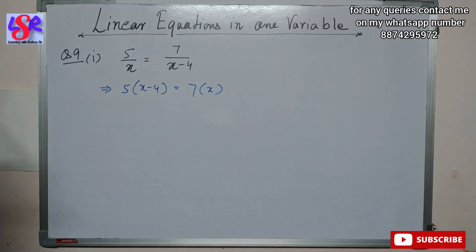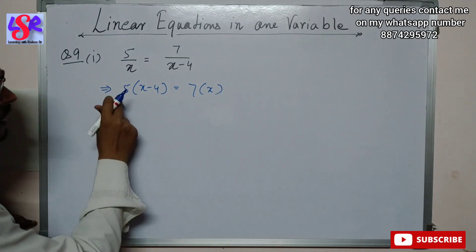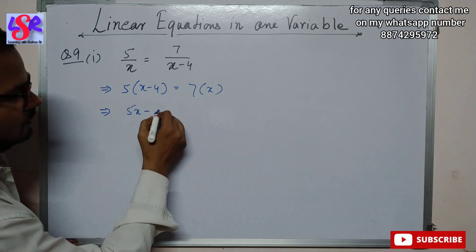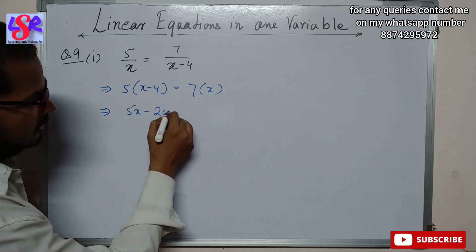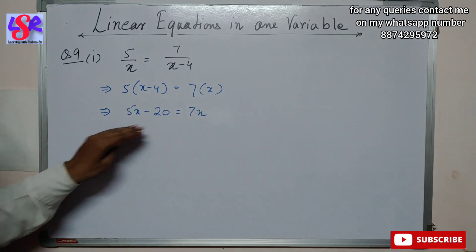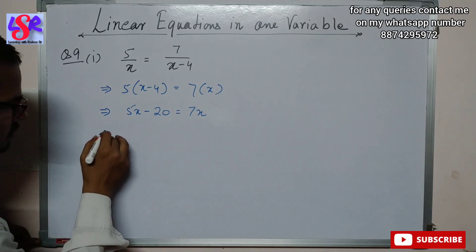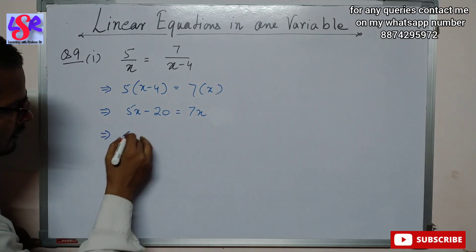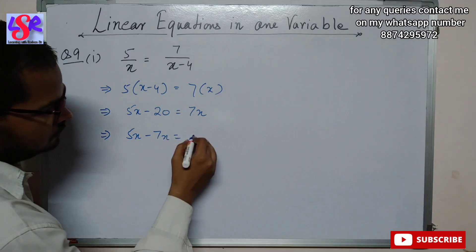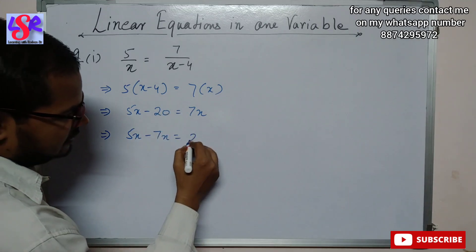Opening the bracket: 5x - 20 = 7x. Then putting all variables on one side and constants on the other: 5x - 7x = 20.